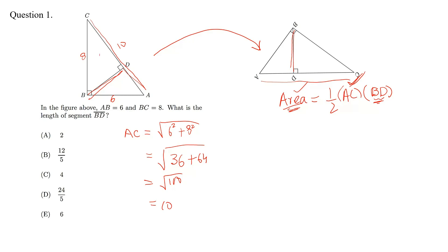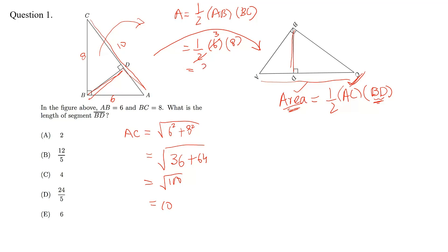Next, we want to calculate the area of this figure. We know that the area is equal to half AB into BC. If we put values here, AB is 6 and BC is 8, so this is 24. The area of this figure is 24.